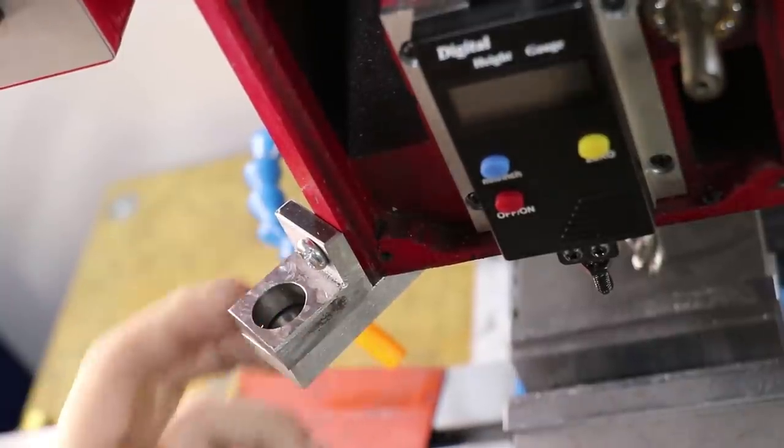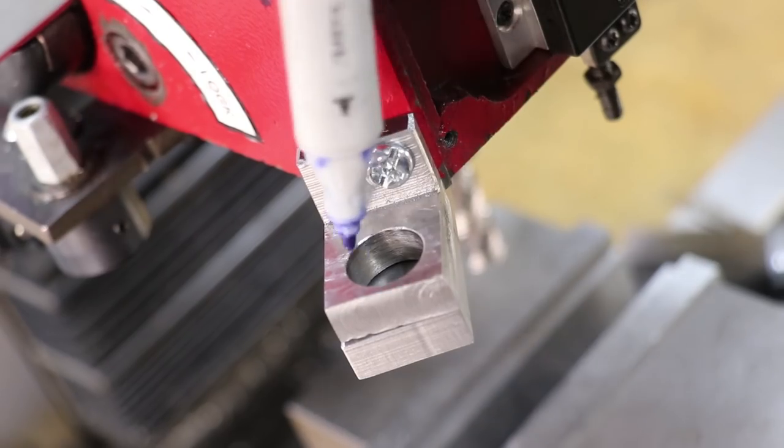Now I'm going to drill the hole for the depthing rod. With the bracket screwed in, I'll mark out and drill the hole for the depthing rod.